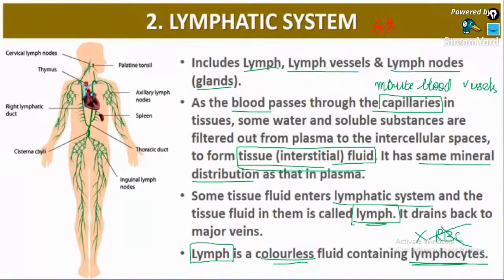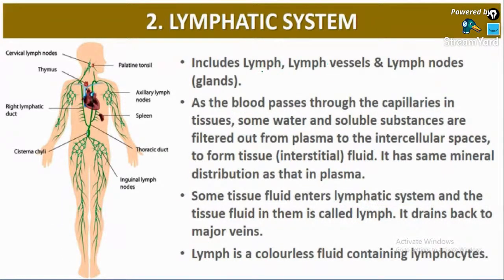The lymphatic system includes lymph, lymph vessels, and lymph nodes. The key MCQ from this topic: lymph is a colorless fluid containing only lymphocytes — no RBCs are present. That is the one MCQ that has been asked from this slide.